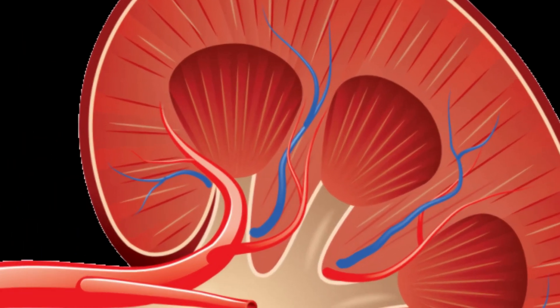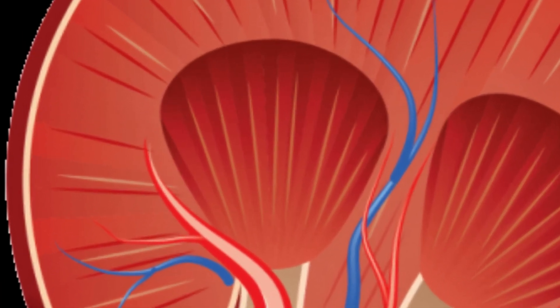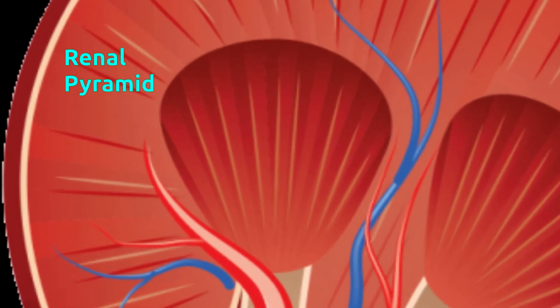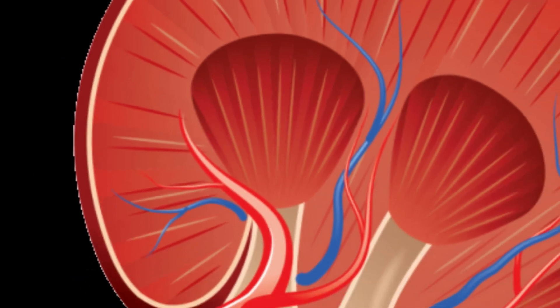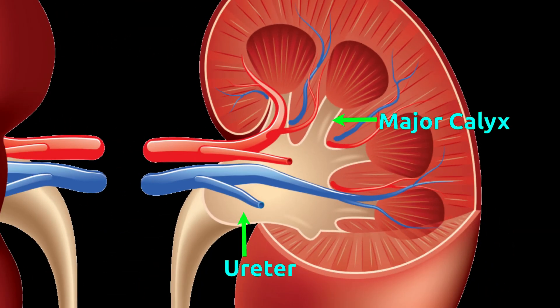The medulla contains cone-shaped structures called renal pyramids. Each renal pyramid contains tube-like structures called calyces. Inside the calyces, urine is stored after purification, and the calyces are connected to the ureter.